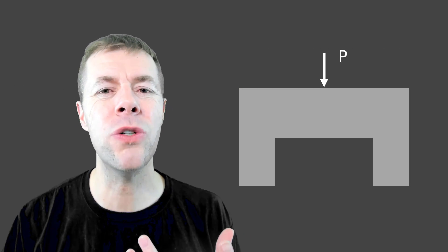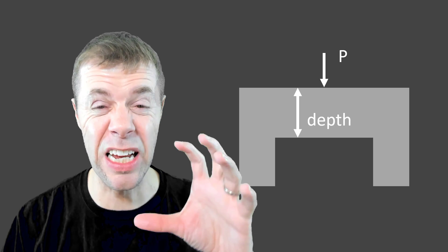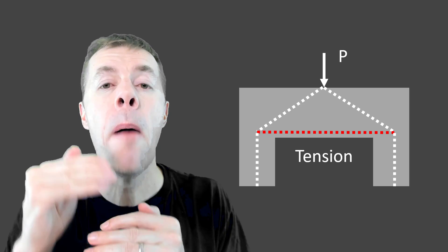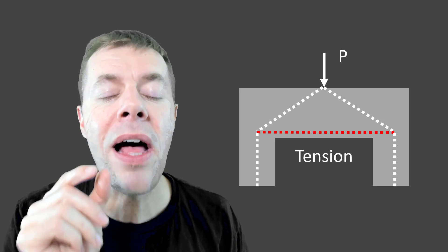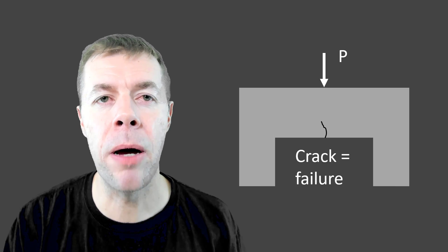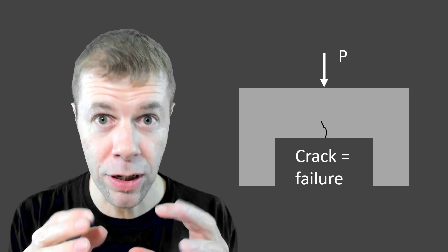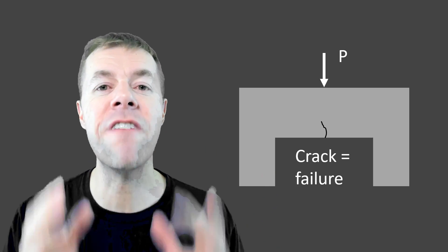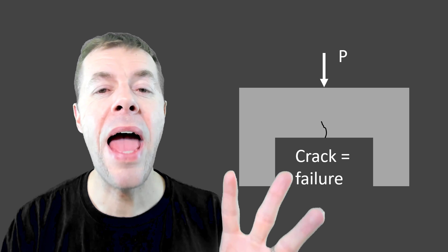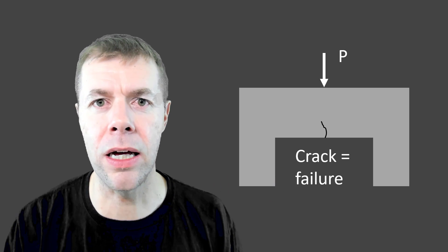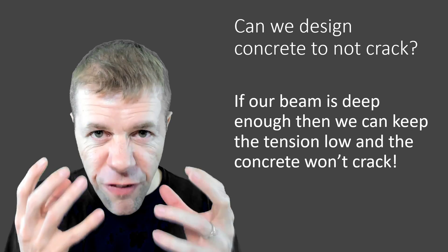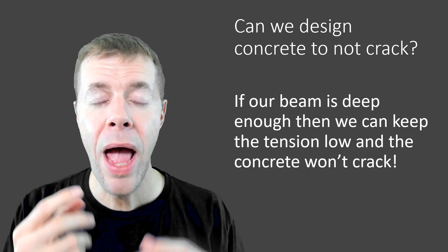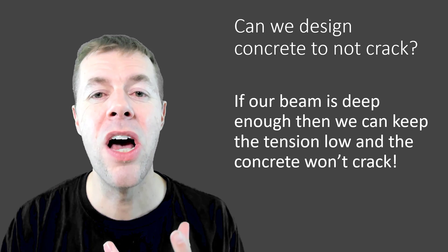So why would you make a beam very deep? If I have a load on top of it and I make it extremely deep, then as that load distributes it will have some tension. But the deeper I make it, the less tension I will have inside of my member. If I get enough tension to cause a crack in this unreinforced system, it would be failure — game over, end of the life of the concrete. So if our beam is deep enough, we can keep the tension low and make the concrete not crack.